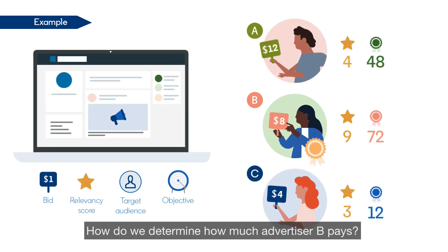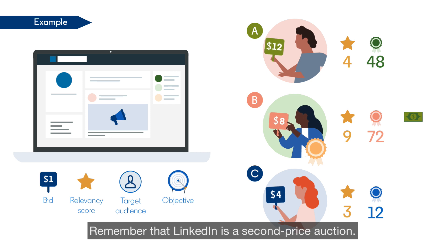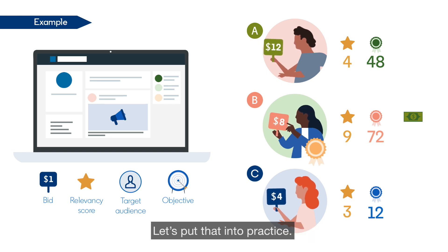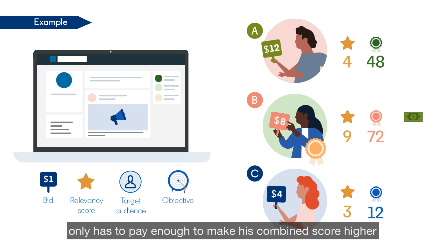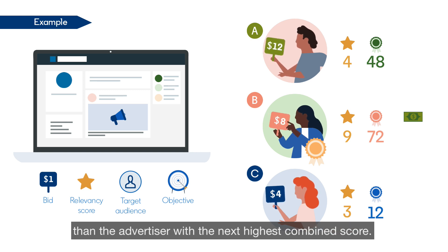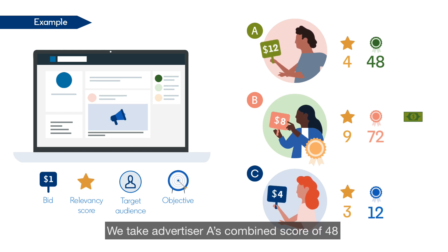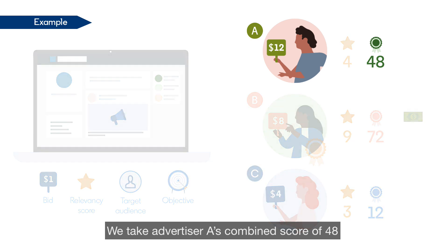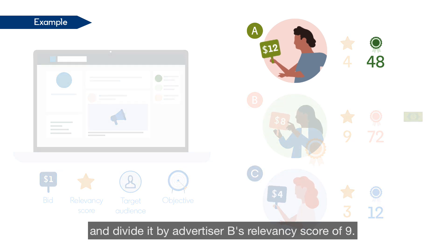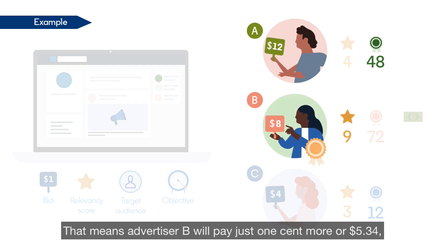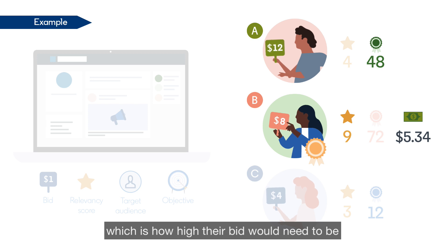How do we determine how much Advertiser B pays? Remember that LinkedIn is a second-price auction. Advertiser B, the winner of the auction, only has to pay enough to make their combined score higher than the advertiser with the next highest combined score. We take Advertiser A's combined score of 48 and divide it by Advertiser B's relevancy score of 9. That means Advertiser B will pay just one cent more, or $5.34, which is how high their bid would need to be to beat the combined score of Advertiser A.